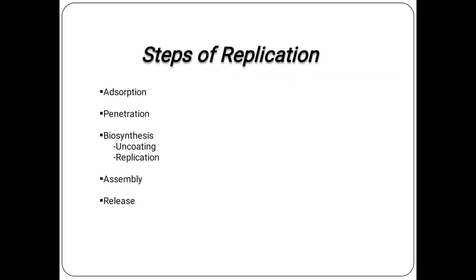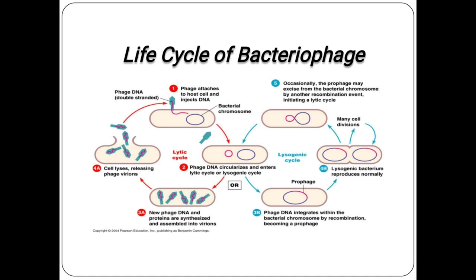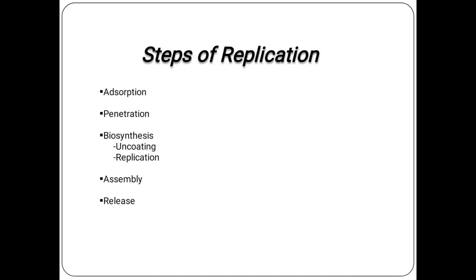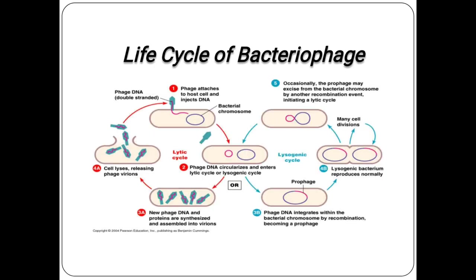Life cycle of bacteriophage replication: the steps involved are attachment, penetration, biosynthesis, assembly, and release. Cells multiply and increase in number through the life cycle. There are two types of life cycles: lytic cycle and lysogenic cycle. The lytic cycle means breakdown — the phage replication cycle that results in the death of the host cell.